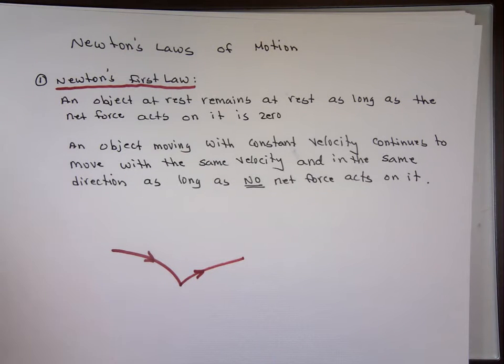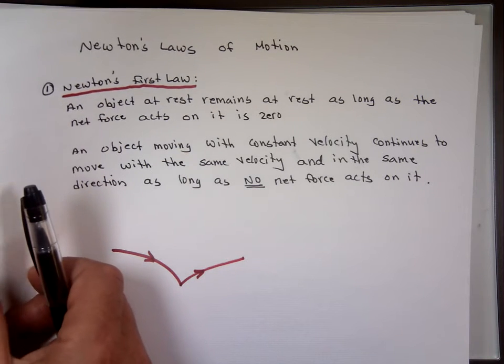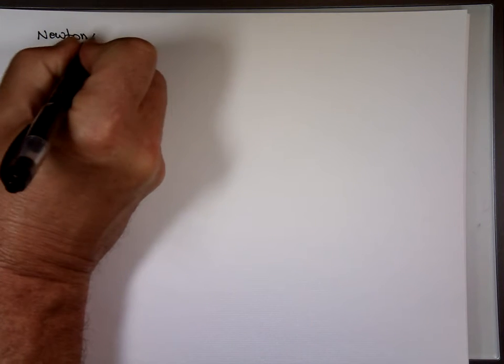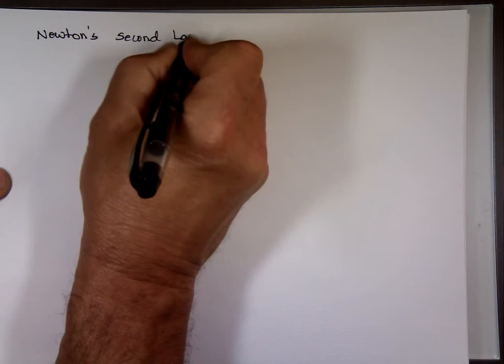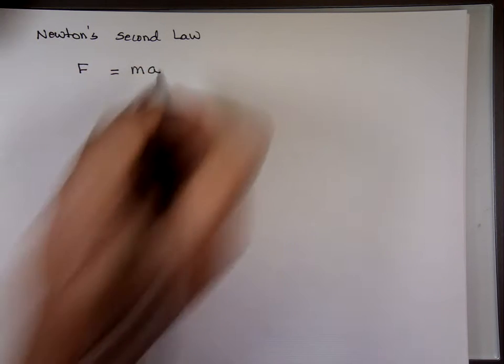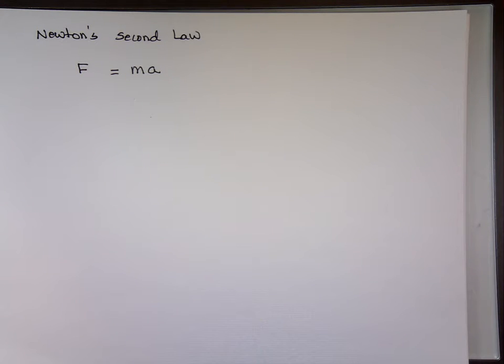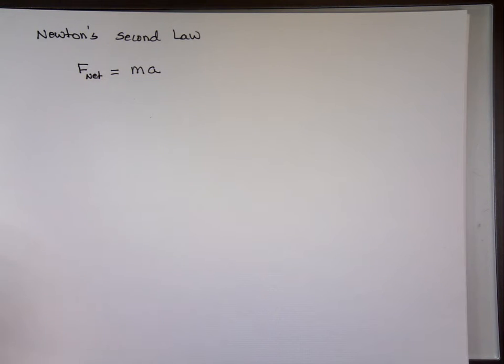What's Newton's Second Law? Newton has three laws, and his second law is very well known — you see people say F equals MA. That's Newton's Second Law. Another way of saying it: F net, the net force, equals mass times acceleration. We'll talk about the net force shortly.